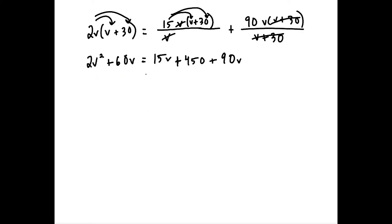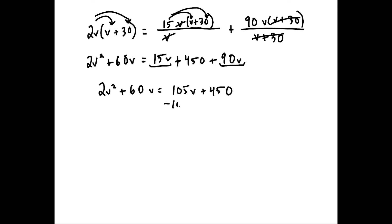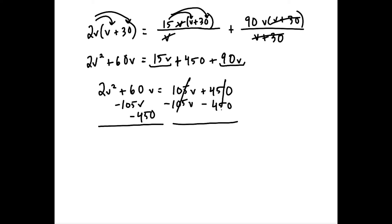Now we have a quadratic, so we get everything on one side. Combining like terms: 15V plus 90V gives 105V, so we have 2V squared plus 60V equals 105V plus 450. We subtract 105V on both sides and subtract 450, giving us 2V squared minus 45V minus 450 equals zero.